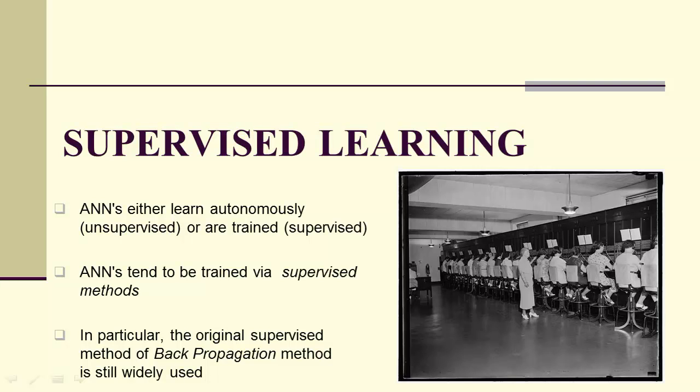Supervised learning. Artificial neural networks can learn autonomously or they can be trained. They tend to be trained via supervised methods, so there are autonomous neural networks and they're very useful, but we're going to focus on supervised training using what's called the backpropagation method.